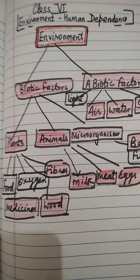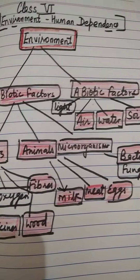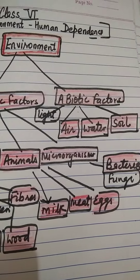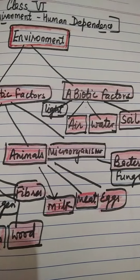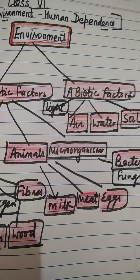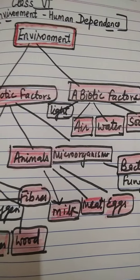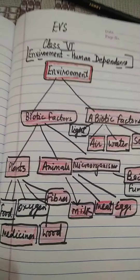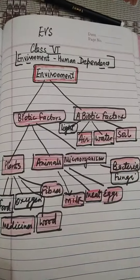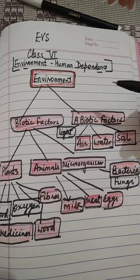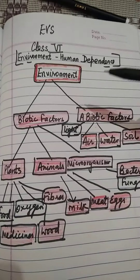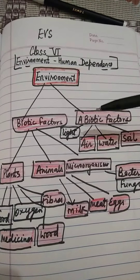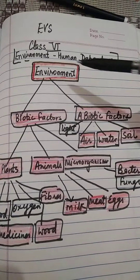Human beings are totally dependent on biotic as well as abiotic components of the environment. It means that environment consists of biotic factors and abiotic factors. Human beings are totally dependent on biotic and abiotic components of the environment for their survival.